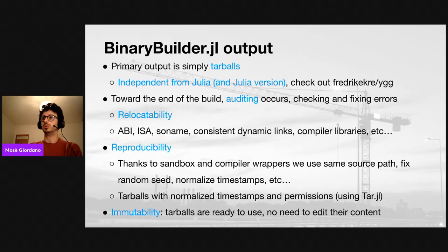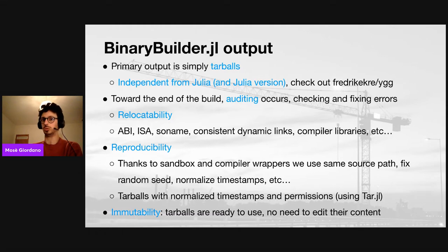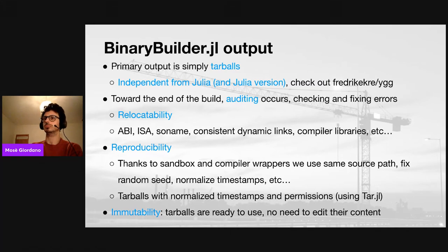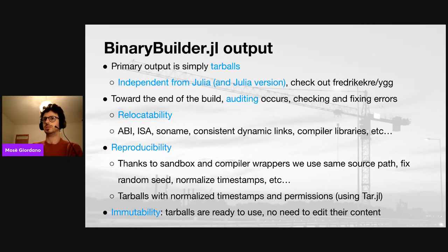The primary output of BinaryBuilder is tarballs. The most important thing about the tarballs we generate is that they are independent from Julia, and in particular from Julia versions — so every time there is a new version of Julia, we don't need to rebuild everything. And there is also a tool — if you check out the repository on GitHub — to automatically install on your machine libraries built with BinaryBuilder, even if you don't use Julia. When we build, we also run an auditing which checks and also fixes some errors.